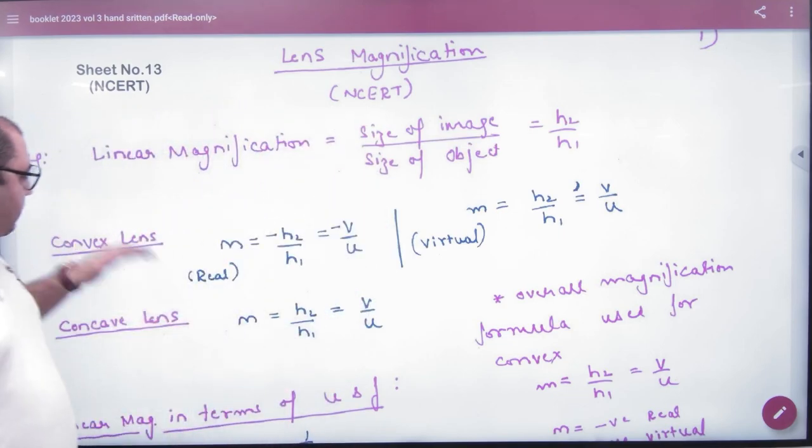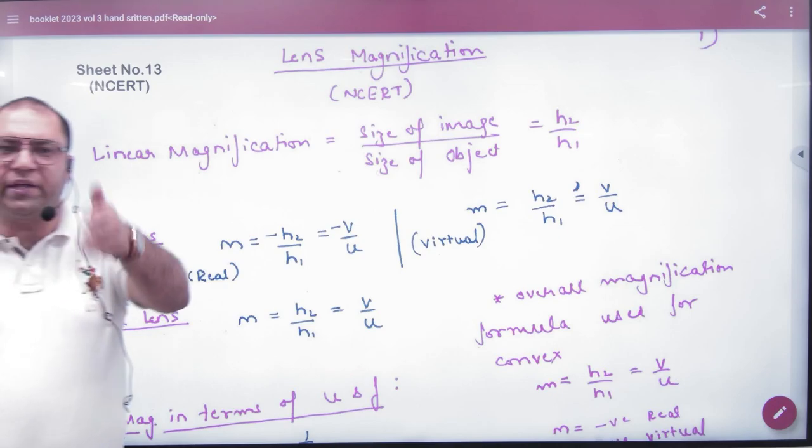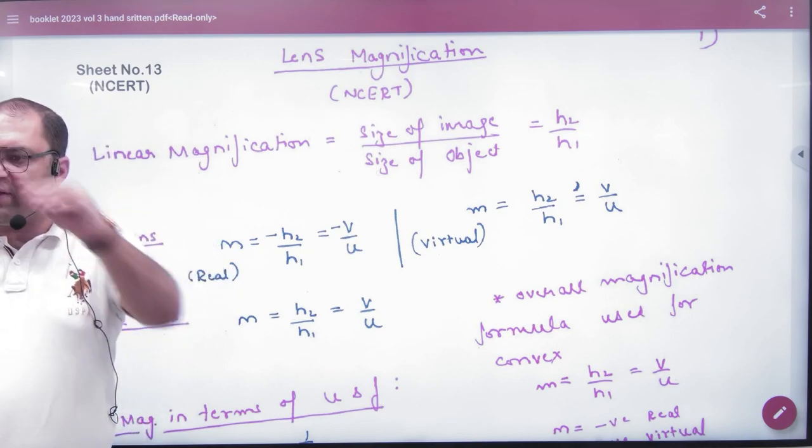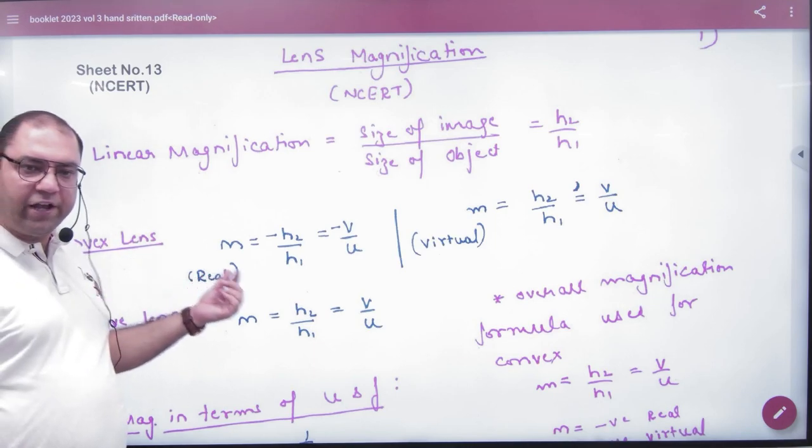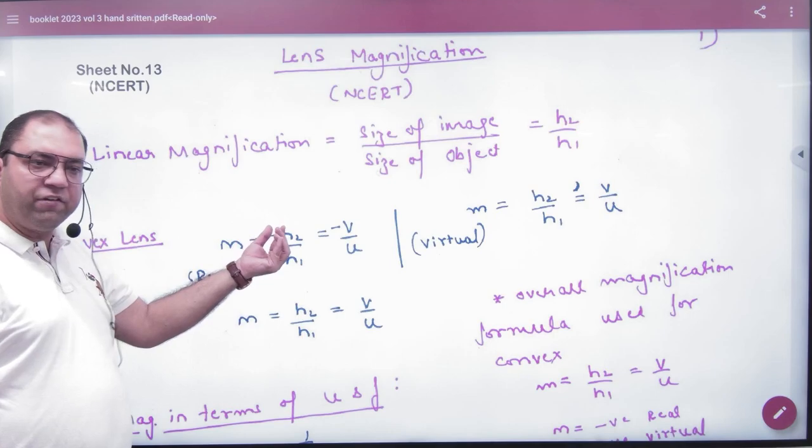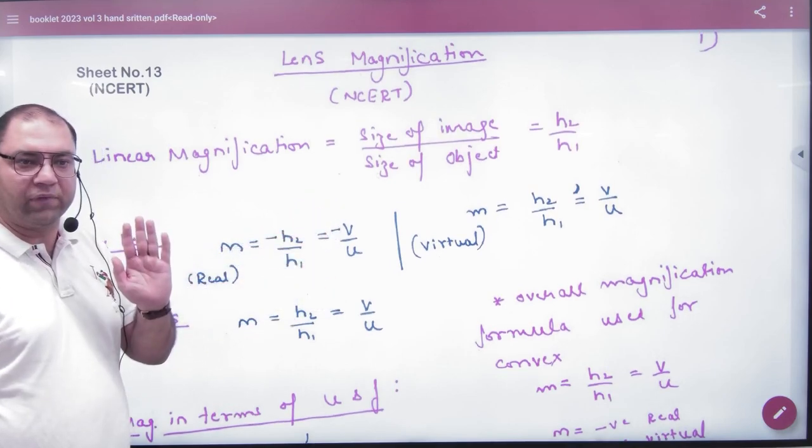Clear? In this case, if you talk about convex, and if you remember it proved in triangles, height by height, base by base. If we put values in it, the magnification value comes from height of image by height of object and distance of image by distance of object. We do this.